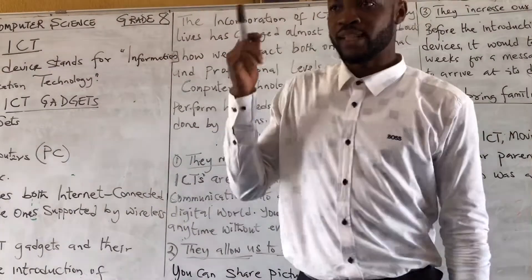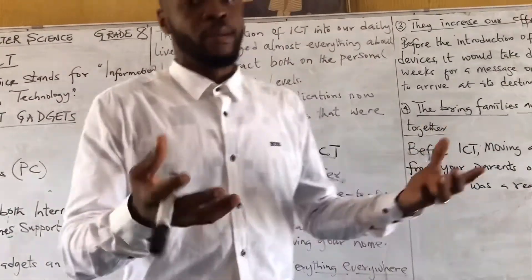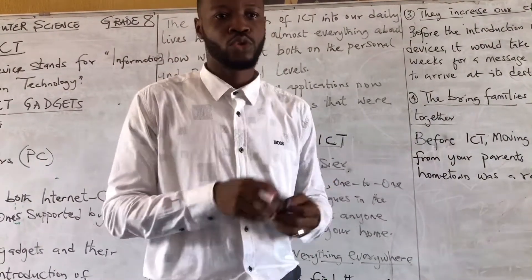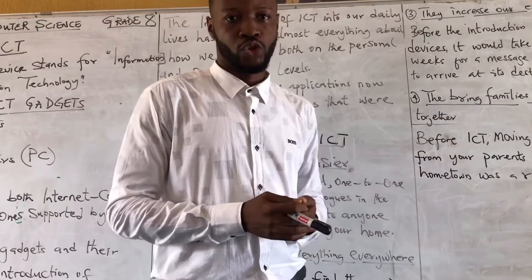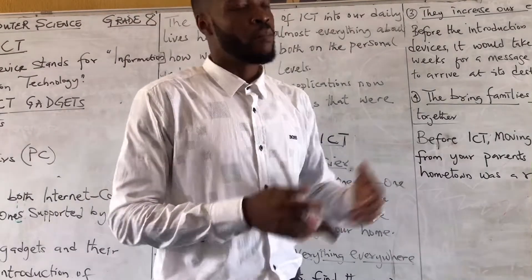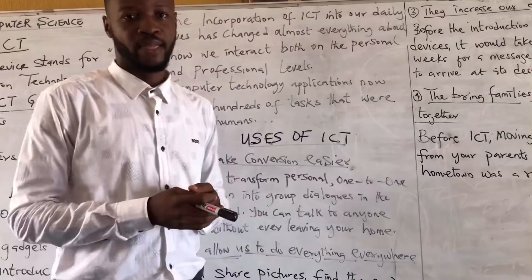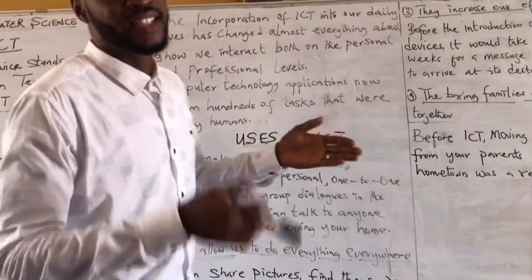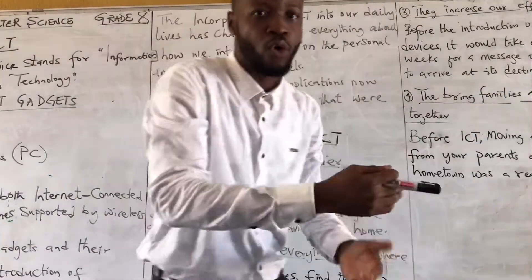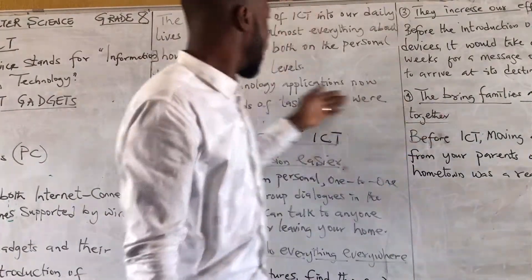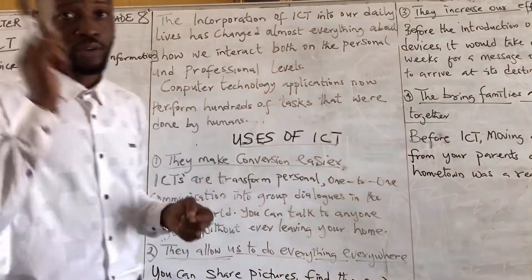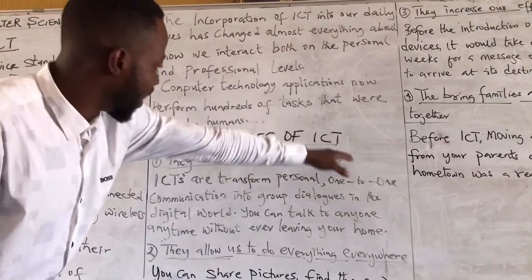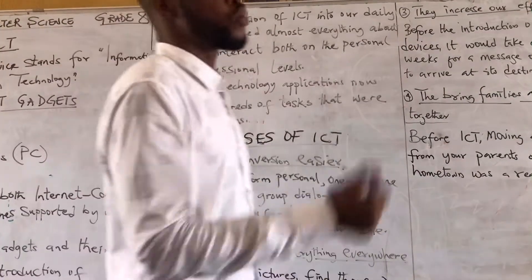For instance, when you go to the bank, years ago they employed manpower to do cashier jobs. But recently we have the ATM machine, which exists because of ICT. This device can serve a large number of people within few minutes, which manpower could not do as efficiently.